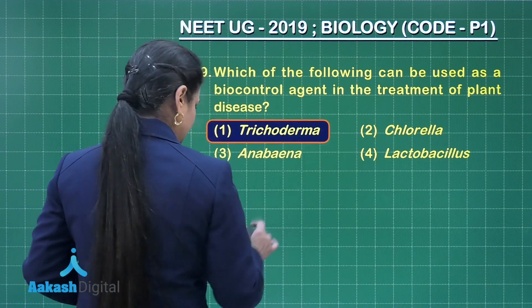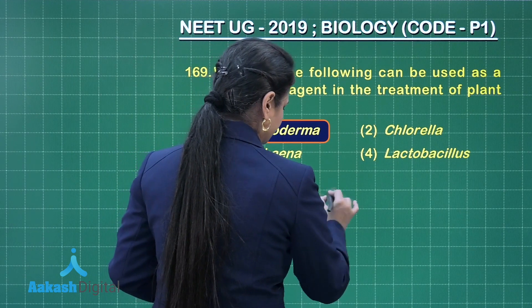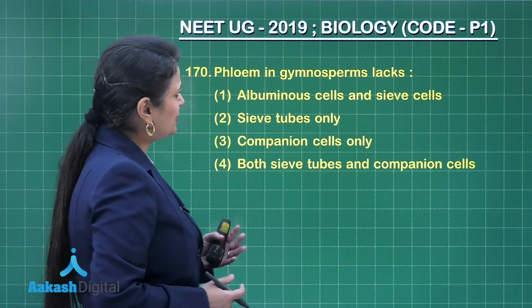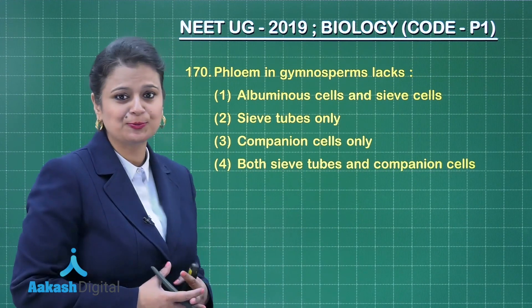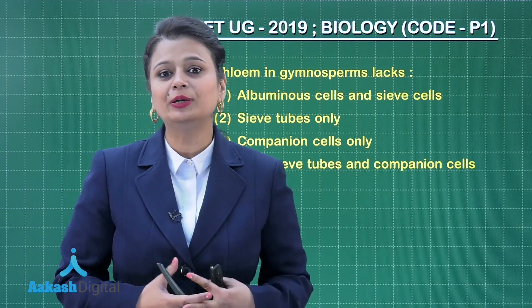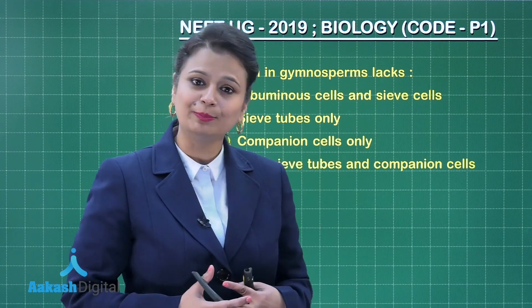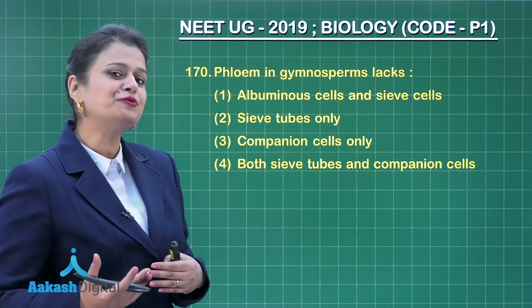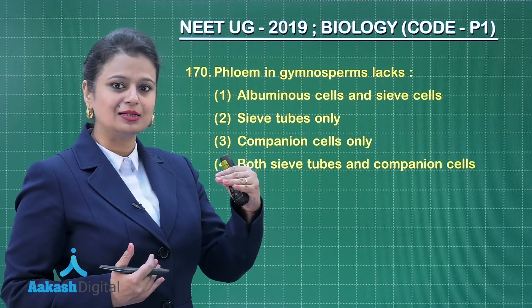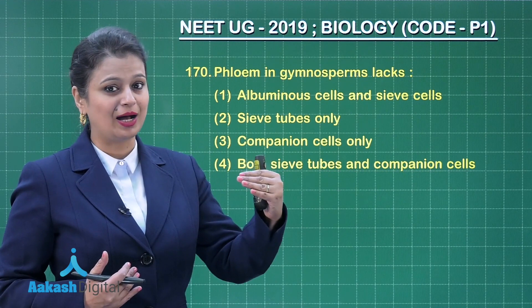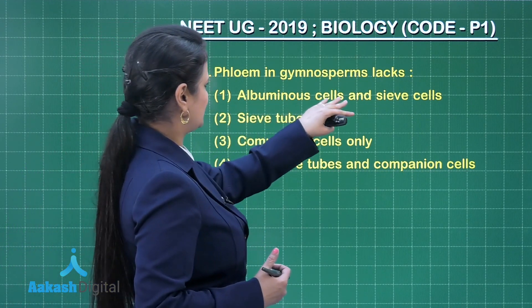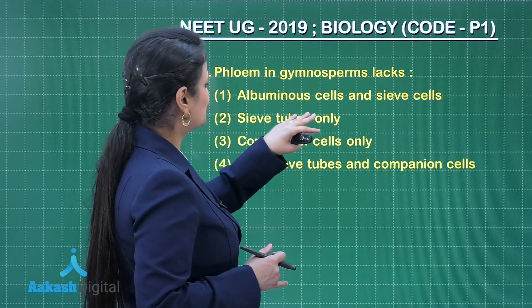Next question: Phloem in gymnosperms. Gymnosperms possess xylem as well as phloem, but in their phloem they don't have sieve tubes or companion cells. Instead of sieve tubes they have sieve cells, and companion cells are replaced by albuminous cells. So the first option — albuminous cells and sieve cells — they are present.